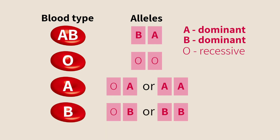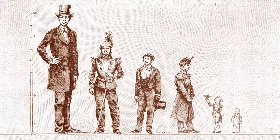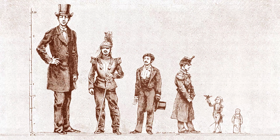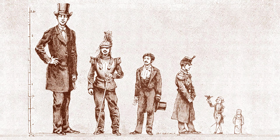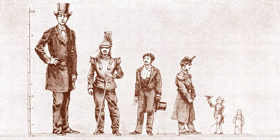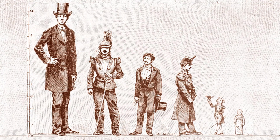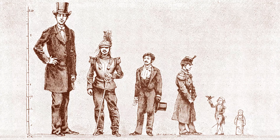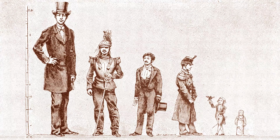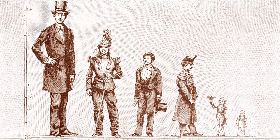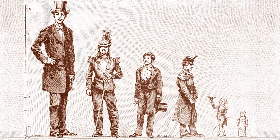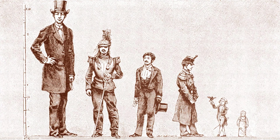Many traits are established by interaction between multiple genes — for example, how tall we are. It is much more difficult to decipher the inheritance of such multiple-gene traits. We are aware that this video is a bit complex for those who haven't studied biology, and a bit simplistic for those who have. This information is, however, both useful and sufficient for the rest of the course.